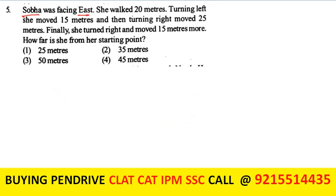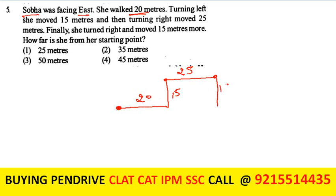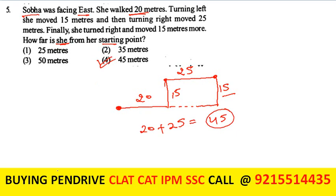Sobhai is facing east and walked 20 m. Turning left, she moved 15 m north. Turning right, she moved 25 m east. Finally, she turned right and moved 15 m south. Since the 15 m north and 15 m south cancel out, the total east distance is 20 + 25 = 45 m. The answer is the fourth option: she is 45 m from the starting point.